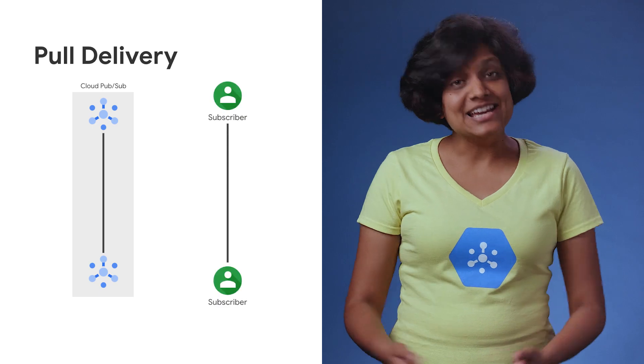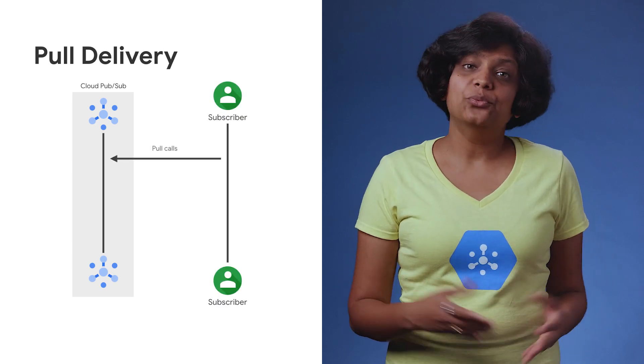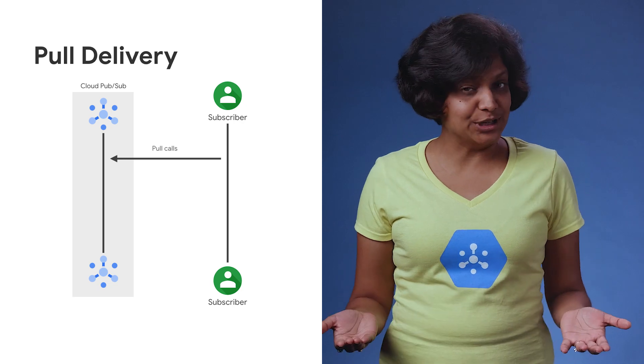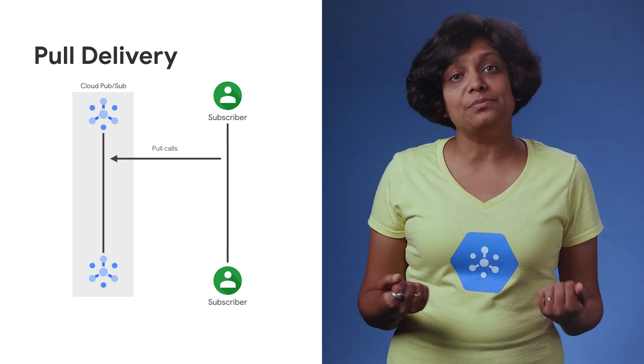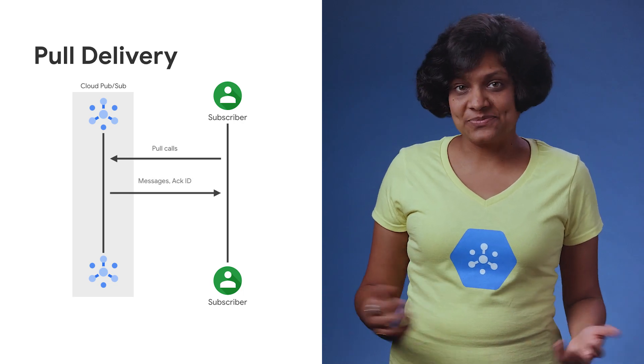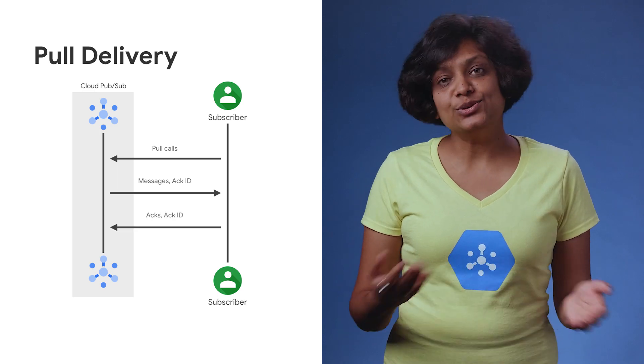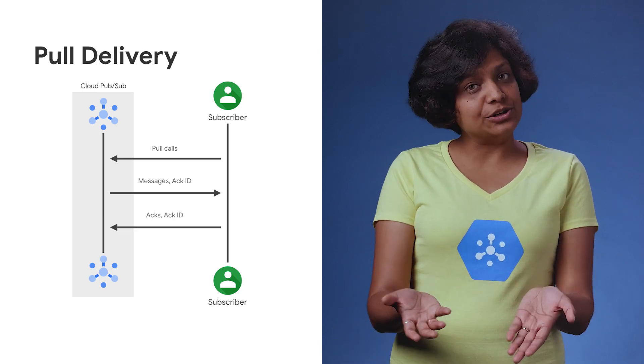A subscription can use either a pull or push mechanism for message delivery, and it's configurable, so you can change or configure the mechanism at any time. In pull delivery, the subscribing application explicitly calls the pull method, which requests messages for delivery. The Cloud PubSub server responds with the message, or an error if the queue is empty, and an ACK ID. The subscriber then explicitly calls the acknowledge method using the returned ACK ID to acknowledge receipt.